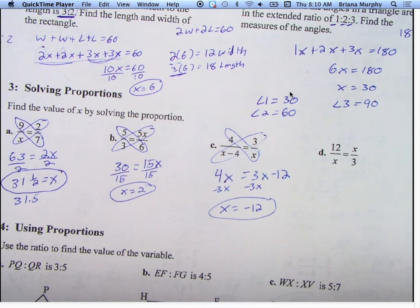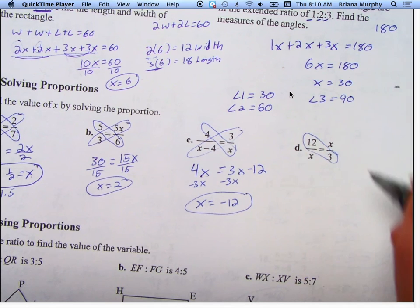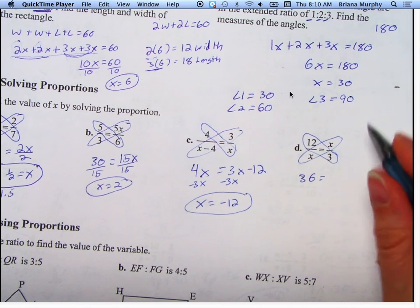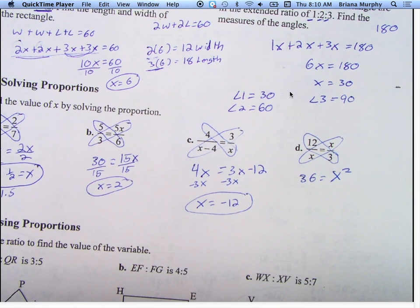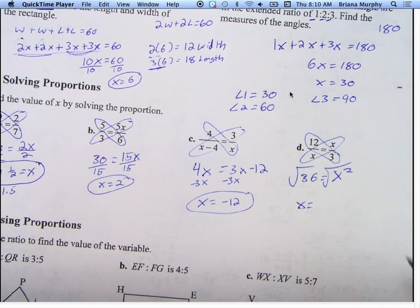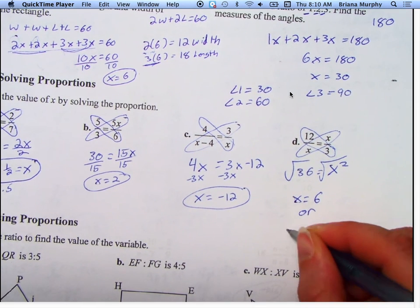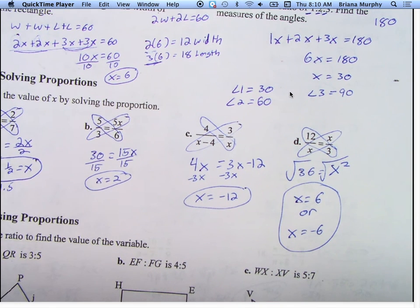Let's look at D. 12 times 3 is 36. X times X is X squared. How do I get rid of an X squared, guys? Square root. Good. So X equals what? 6. Remember, X could also equal what? Negative 6. Right? Because a negative times a negative is a positive.